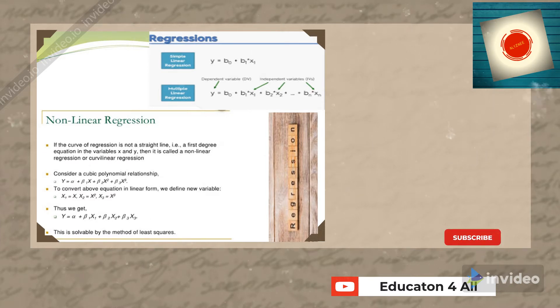Consider a cubic polynomial relationship with the equation y = α + β1x + β2x² + β3x³. To convert this equation to linear form, we define new variables: x1 = x, x2 = x², x3 = x³.